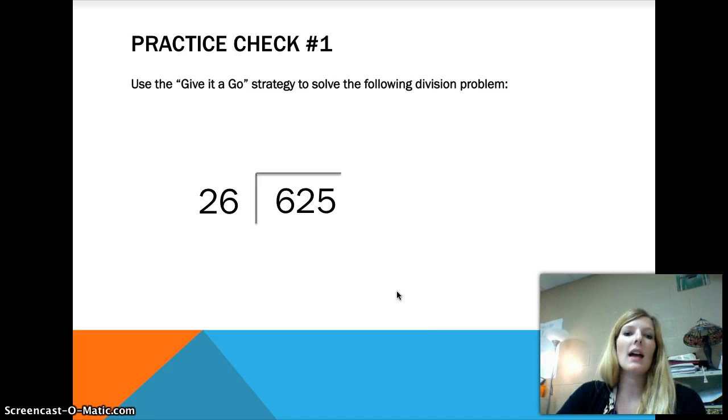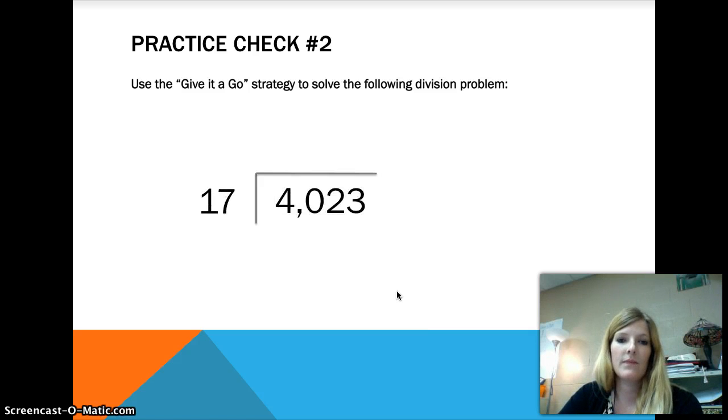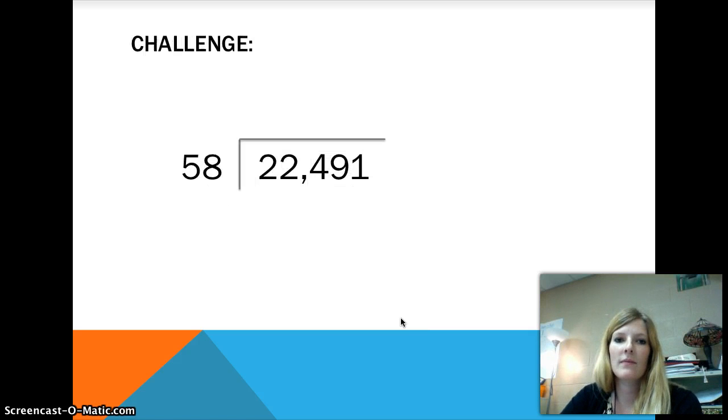Here is our first practice check. I want you to use the Give It a Go strategy with a multiplication to solve this division problem: 625 divided by 26. Work this problem in your math notebook. Go ahead and pause the video while you do this. Practice check number 2. This one's a little bit harder, but I know you can do it. 4,023 divided by 17. Use that Give It a Go strategy again to see what you come up with. Go ahead and pause the video because I'm going to give the answers away after the challenge. Challenge problem: 22,491 divided by 58. Try it. You won't get penalized if you don't get this one right. Okay, go ahead and pause the video.